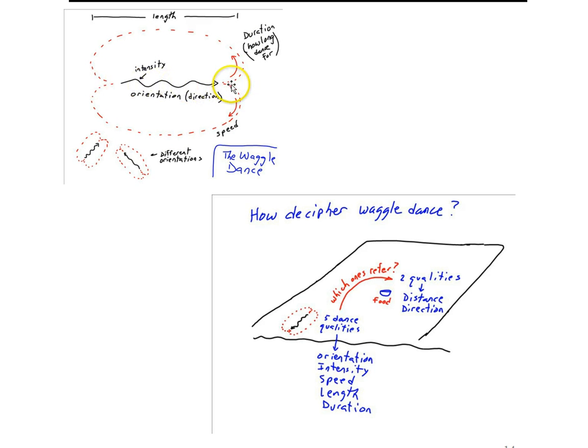Perhaps the length of the waggle run itself, maybe the intensity of the waggles, the orientation, the direction of the waggles—is it waggling this way or in a different direction? How long does the bee dance for, the speed of the dance? So there are many aspects of the waggle dance that could theoretically carry information about where food is located.